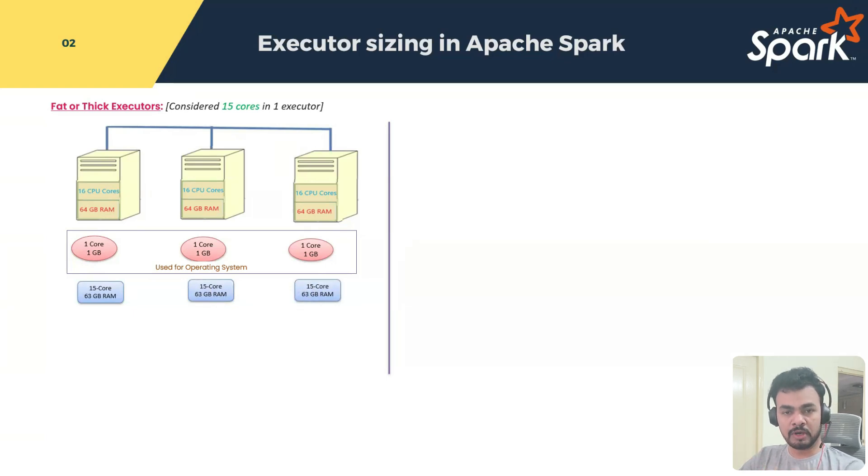Till here, topic is common for fat, thin, and optimally sized executors. From here, topic will change. What are the next calculations? So here, fat means very simple. Fat means I will assume one executor for one machine or for one node. What is the node configuration? 15 cores, 63 GB is my node capacity. That means I assume only one executor. If I assume only one executor for 15 cores, generally we will call it as a fat executor.